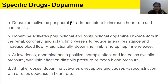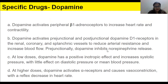Dopamine also activates pre-junctional and post-junctional dopamine-1 receptors in the renal, coronary, and splenic vessels to reduce arterial resistance and increase blood flow. Pre-junctionally, dopamine inhibits norepinephrine release. At low doses, dopamine has a positive inotropic effect and increases systolic pressure with little effect on diastolic pressure or mean blood pressure.